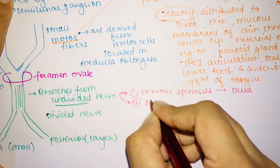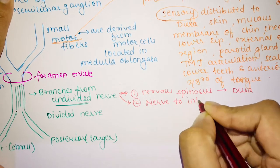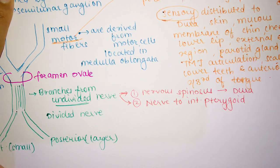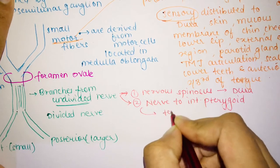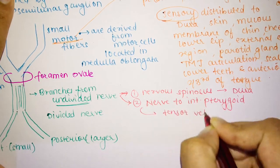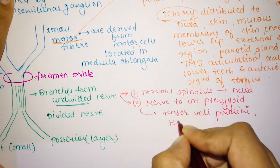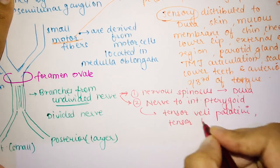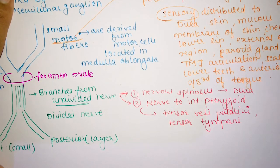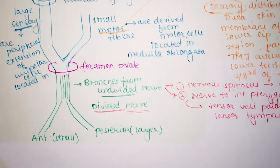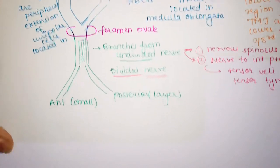The branches from the undivided nerve are: first, the nervus spinosus, which supplies the dura mater of the middle cranial fossa; and second, the nerve to the internal pterygoid, which supplies the pterygoid muscle, as well as tensor veli palatini and tensor tympani muscles.